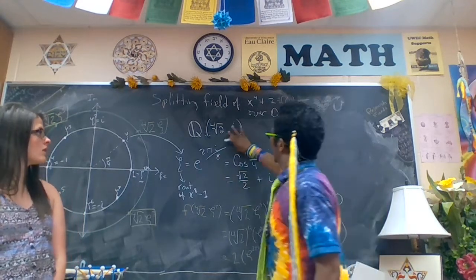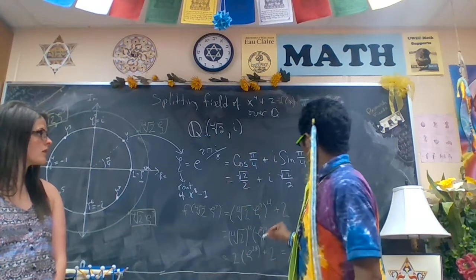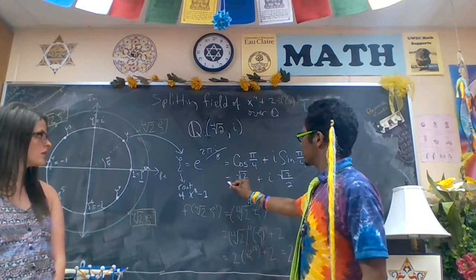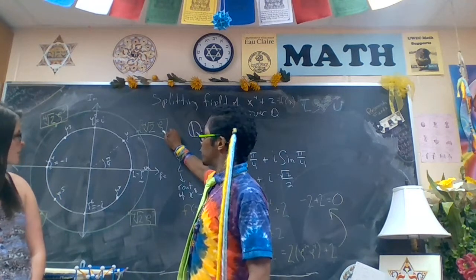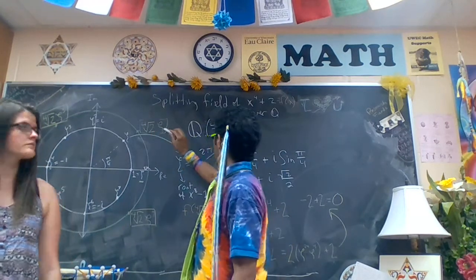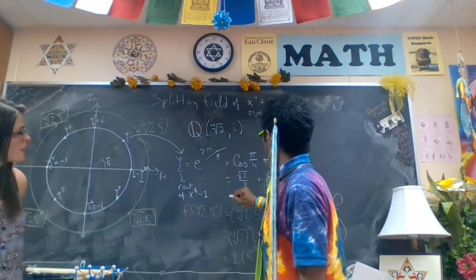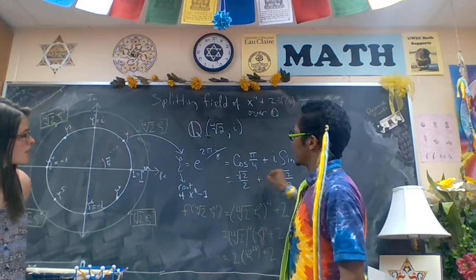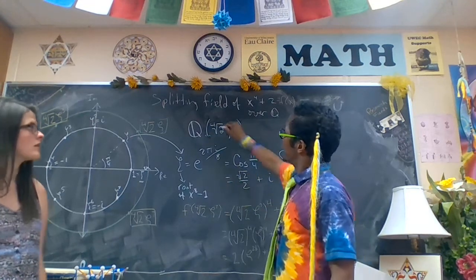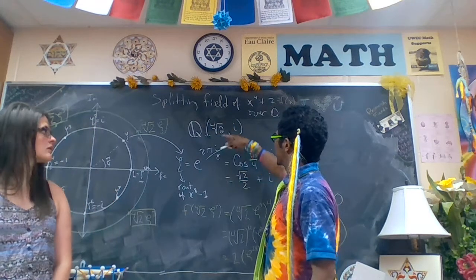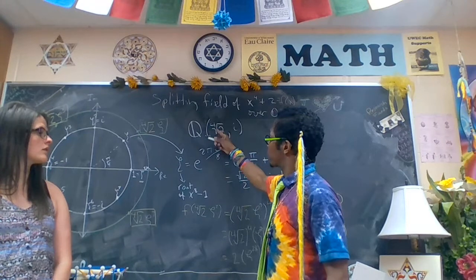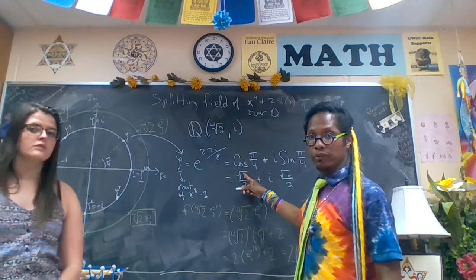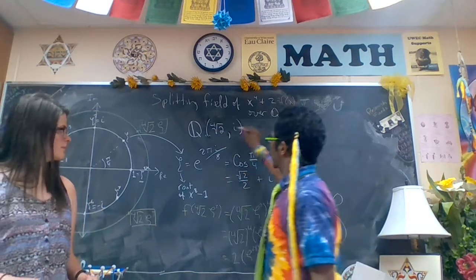If we adjoin just the 4th root of 2 and i, we claim that this is the splitting field for this polynomial. Well, let's see. Do we have root... So, we need to have, for sure, zeta and a 4th root of 2. And once we include zeta, we have all the powers of zeta. But, do we really need zeta? Zeta is root 2 and i. So, we adjoin the 4th root of 2. Then, 4th root of 2 times 4th root of 2 gives the square root of 2 in there. So, let's call this f.